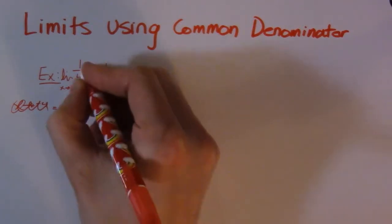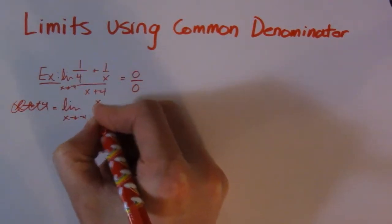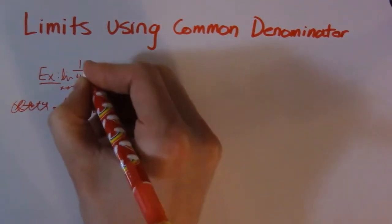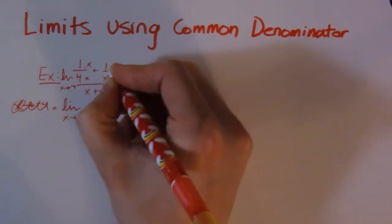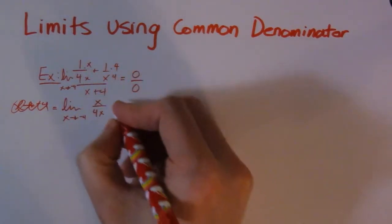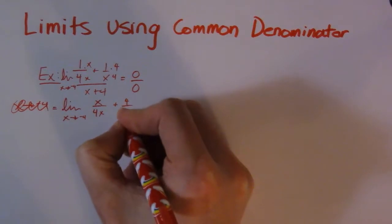So I'll multiply that by x over x. So there's my x over 4x. And this one by 4 over 4, so plus 4 over 4x.